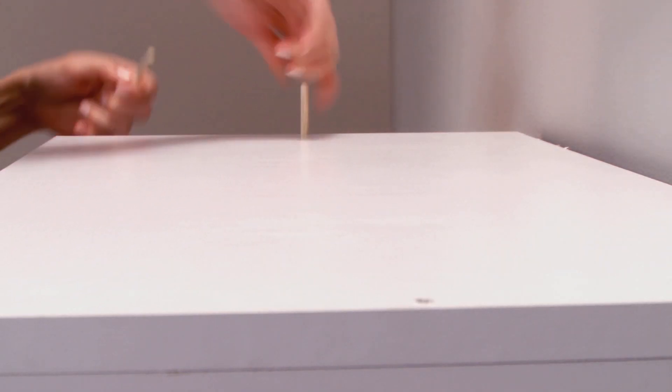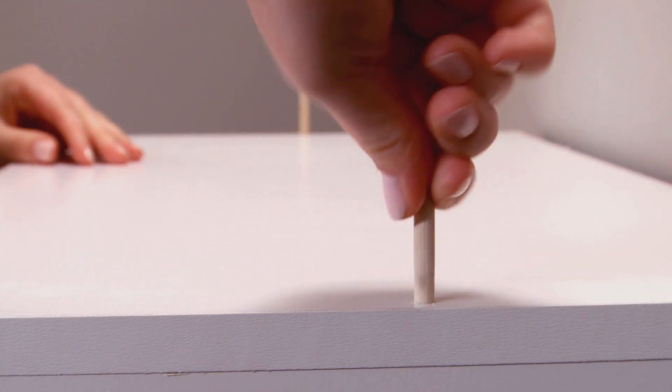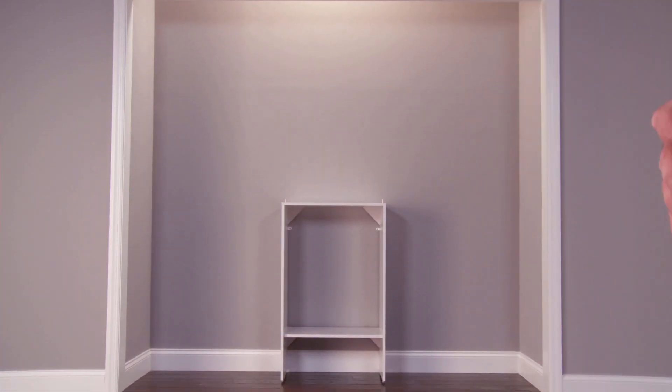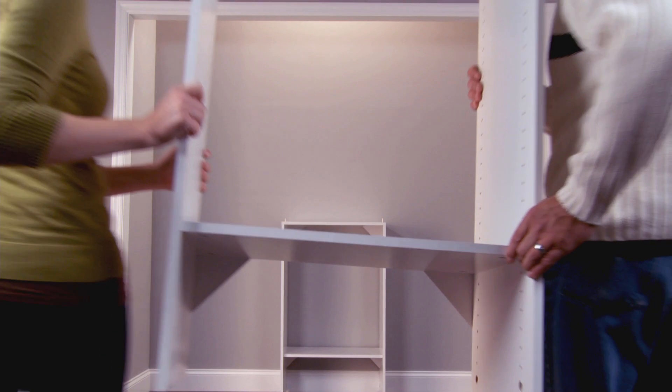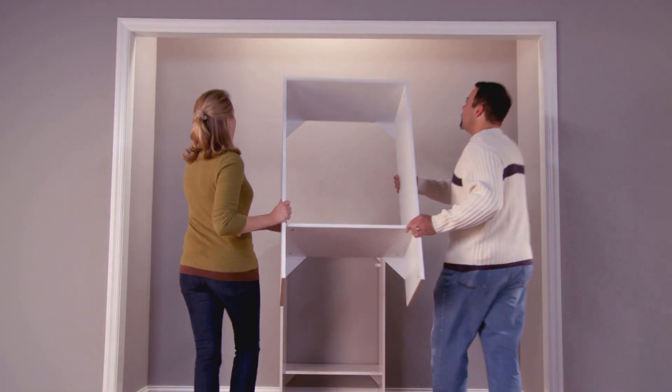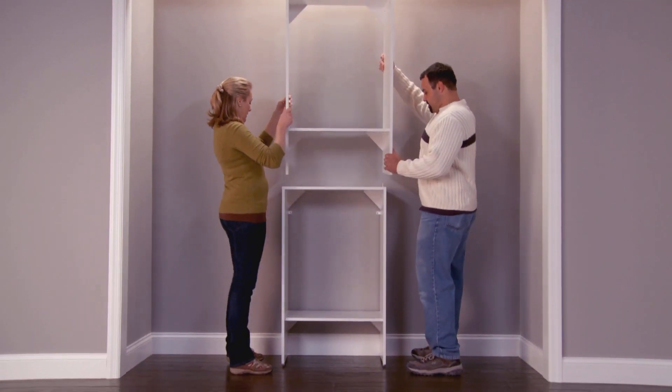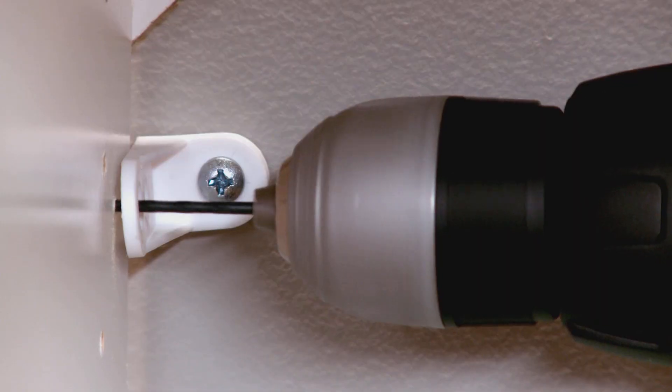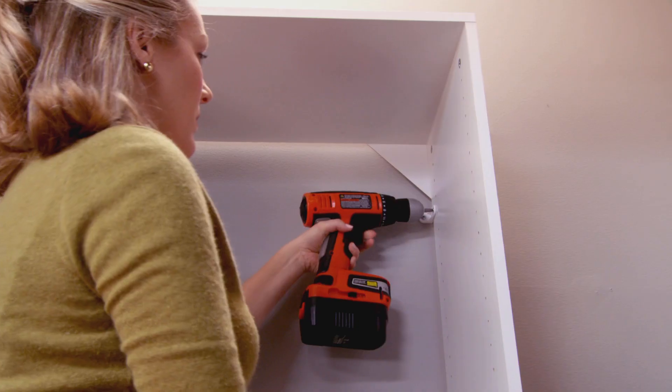Place the dowels into the center holes along the top edge of the base unit. Next, attach the top unit to the base unit and to the wall. You may need a friend to help you lift the top unit into place. Align the dowels with the holes on the bottom of the top unit to stack. Now attach this top unit to the wall by installing the L brackets just like you did on the base unit.